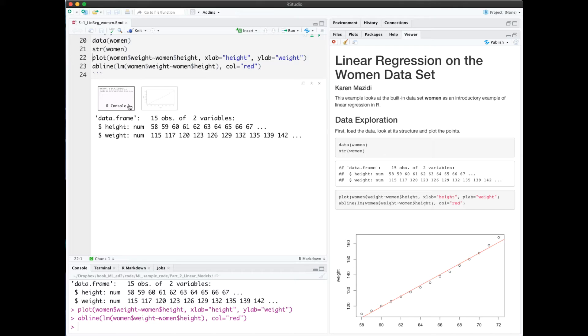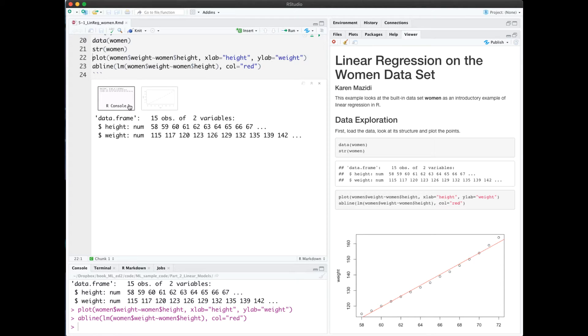We see that it's a tiny dataset, just 15 rows and two variables, which are height and weight. This code chunk also plots the data with height on the x-axis and weight on the y-axis. We drew an AB line there. Looking at this, we see that there is a very strong linear relationship between height and weight.